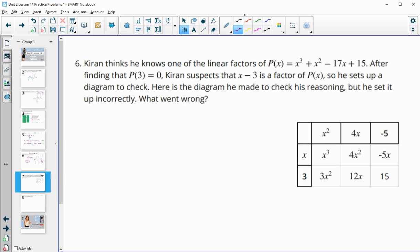Number six: Kieran thinks he knows one of the linear factors of P(x) = x^3 + x^2 - 17x + 15. After finding that P(3) = 0, Kieran suspects x minus 3 is a factor and sets up a diagram to check. What went wrong? When he plugs in 3 and gets 0, he is correct that x equals 3 is a zero. He subtracted the 3 back over and figured out this was a factor. He did that right, but when he plugged it into the diagram, he missed the negative with the 3. He should have put x minus 3, not x plus 3.